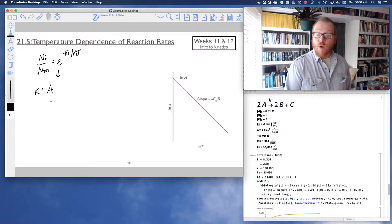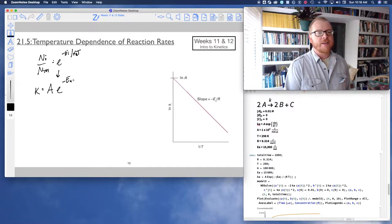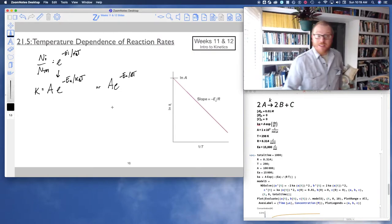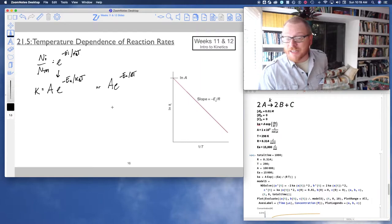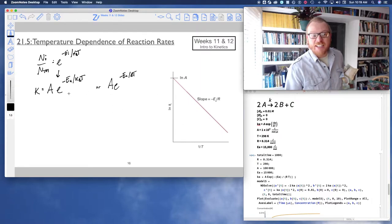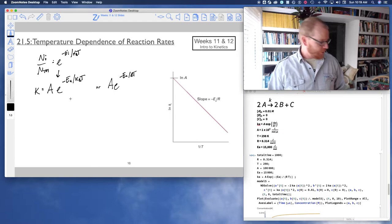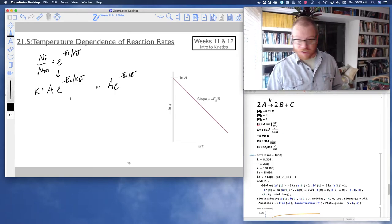A rate constant k equals what I'm going to call the frequency factor A times e to the negative EA divided by RT, depending on the units. It's the same form as the molecular partition function, so this exponential really is giving us the fraction of molecules with sufficient energy to overcome the activation energy.